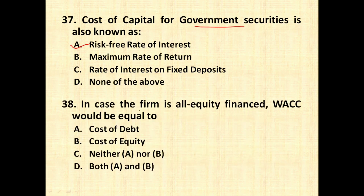The next question: if a firm is 100% equity financed, then WACC — weighted average cost of capital, or KO — will be equal to the cost of equity. If it is a 100% debt-based company, it will be equal to KD, the cost of debt. If it is financed by both debt and equity, then we calculate WACC based on the weights of both sources.